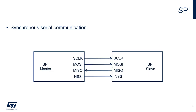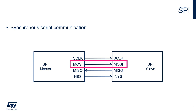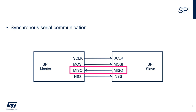SPI allows synchronous full-duplex communication between a master and several slave devices. The communication is based on four lines: a clock signal generated by the master which defines the timing of the bit transmission on the bus, a MOSI line carrying data from the master to the slave, and a MISO line for data in the opposite direction.